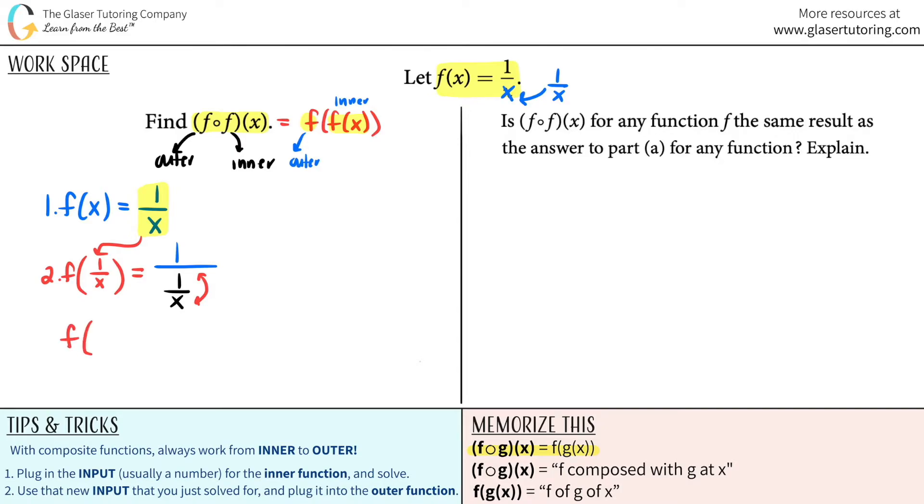So basically, f of one over x would be the same thing as saying one times x over one. And now you can clearly see here that one times x over one, the ones cancel out if you want to look at it that way. F of one over x, which equals f of f of x, or it also equals f composed with f at x, they all mean the same thing. But your answer would just be x.